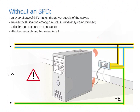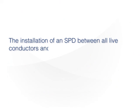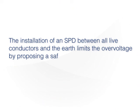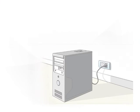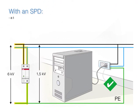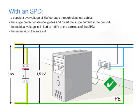After the overvoltage, the server is out of service and a risk of fire is present. The installation of an SPD between all live conductors and the earth limits the overvoltage by proposing a safer path and diverting it directly to the ground. With an SPD, a transient overvoltage of 6 kV spreads through electrical cables. The surge protection device ignites and diverts the surge current to the ground. The residual voltage is limited at 1.5 kV at the terminals of the SPD, and the server is on the safe side and protected from the overvoltage.